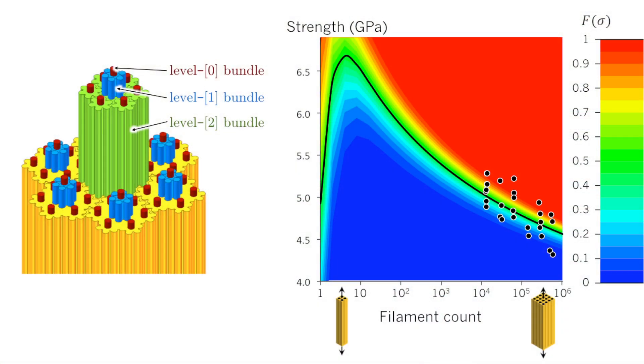These observations led to the idea of representing the fiber bundles hierarchically. This representation was naturally suited to yield analytically the stochastic strength distribution for a bundle with a given number of fibers from simple fiber matrix and interface properties.